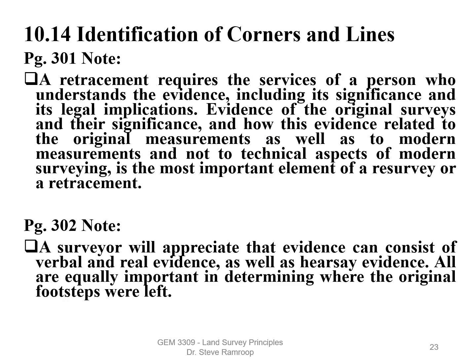Identification of Corners and Lines, page 296, Section 10.14. A retracement requires the services of a person who understands evidence — how to collect it, the significance of it, and its legal implications. Evidence of original surveys includes its significance and how this evidence relates to the original measurements as well as to modern measurements, not just the technical aspects of the modern survey. In a nutshell, this is what a licensed land surveyor does. A surveyor will appreciate that evidence can consist of verbal and real evidence, all prioritized in terms of weights attached to them. All are equally important in terms of where the original footsteps were left.